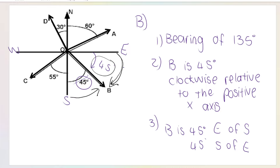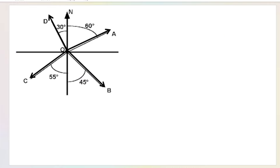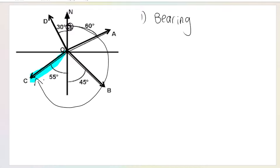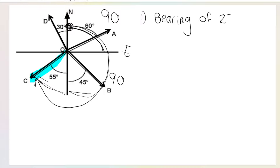Moving on to vector C. Number one is bearing. Bearing is an angle measured clockwise from the north. From north to east is 90, then from east to south is another 90, so so far we've got 180. Then we go 55 degrees further, so it's 180 plus 55 — a bearing of 235 degrees. From the north: 90, then 180, then add another 55, we get 235. Bearing done.